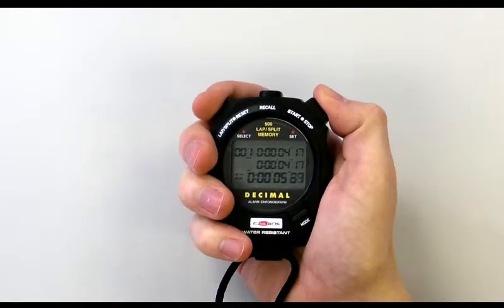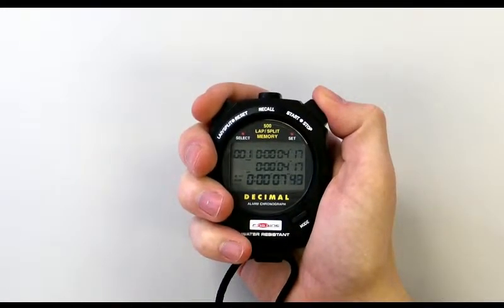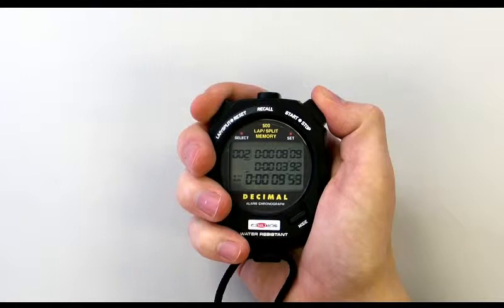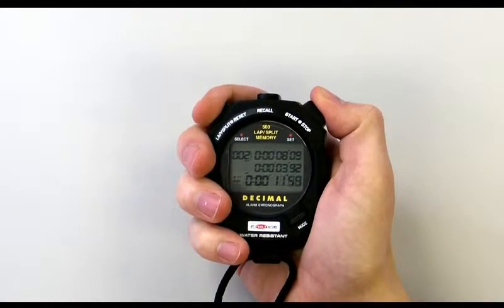its triple display screen simultaneously shows the split on the top line, the lap split on the middle line and the total running time on the bottom line. After 5 seconds all displays return to current running times.